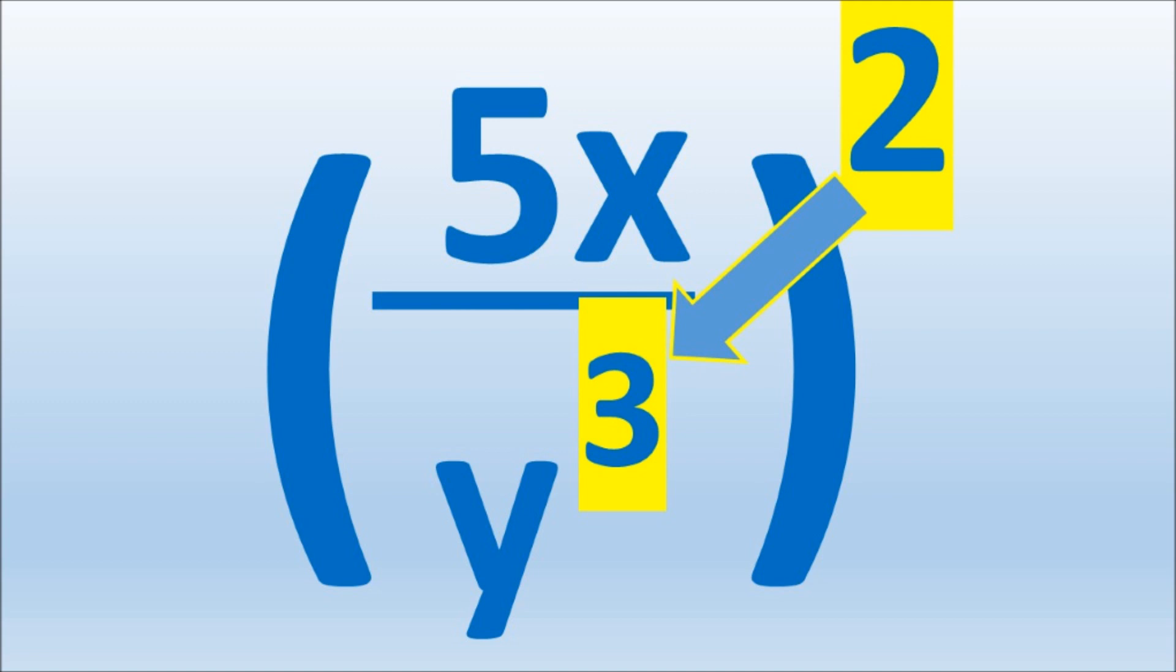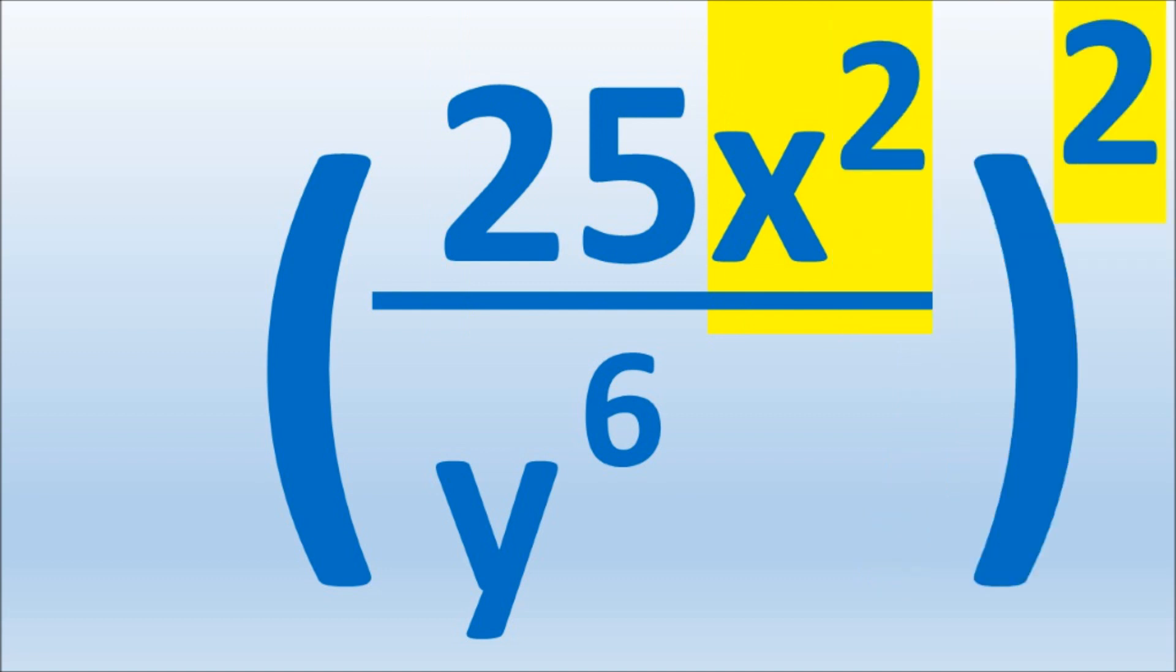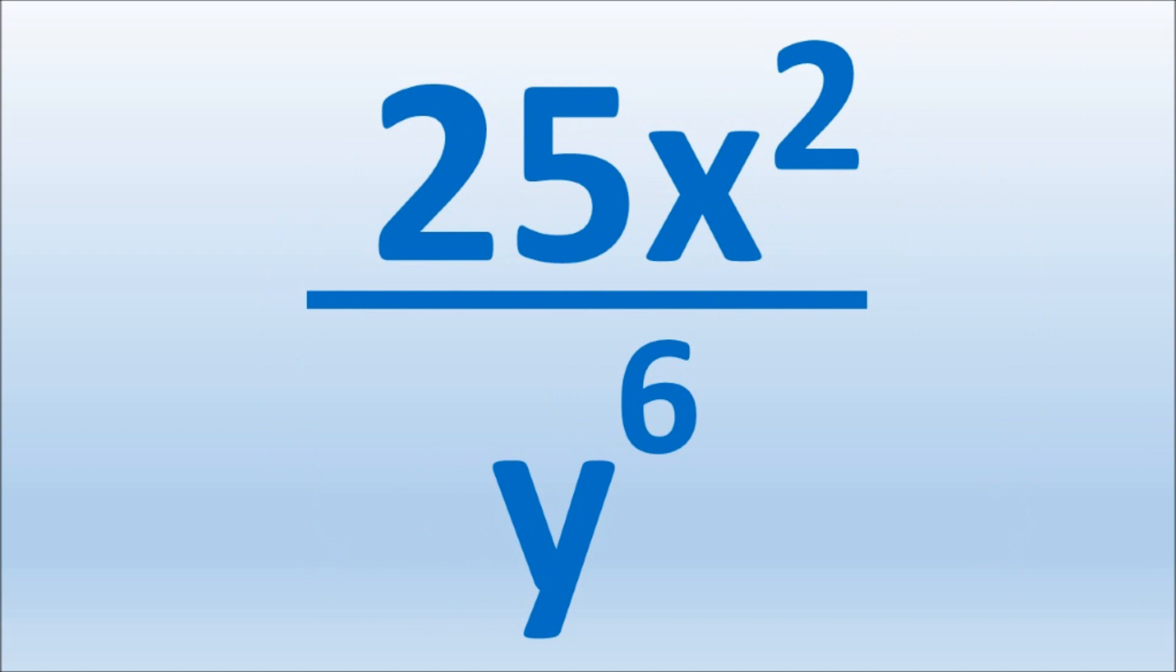We multiply the exponent of 3 by 2 to get 6. We multiply 5 by 2 to get 5 to the second, which evaluates to 25. x is raised to the second power. We remove the parentheses, and that is the answer. Thanks.